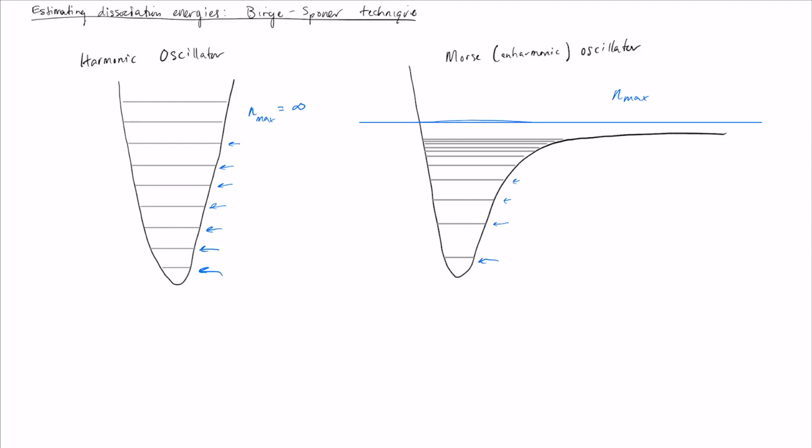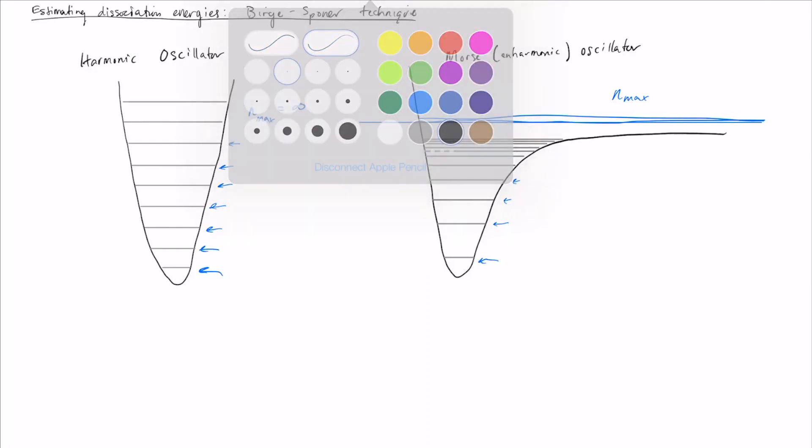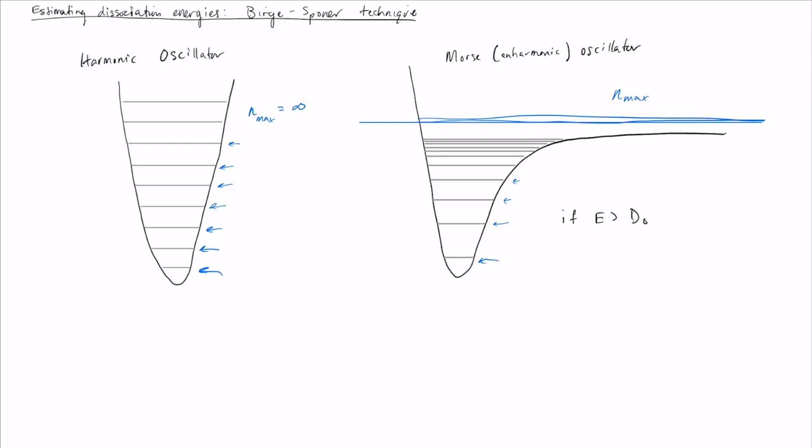At this blue line that I've shown on the right, you can have an energy just slightly above it as well. What happens is that if your energy is greater than the dissociation energy—the dissociation energy is this difference between the bottom of the well and the value at infinity—then if E is an allowed energy, E plus some infinitesimally small extra bit of energy is also allowed.